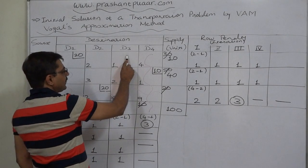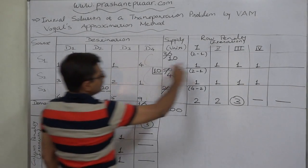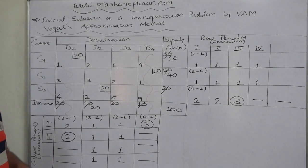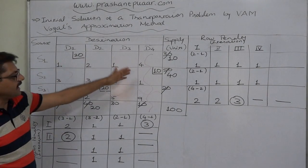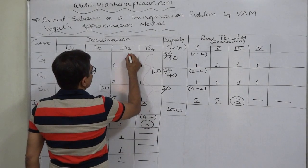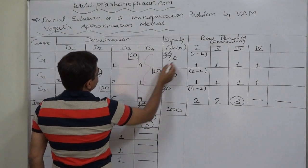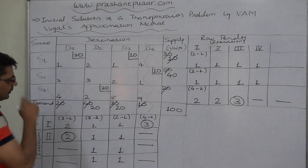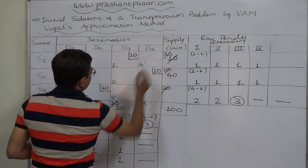Since the same cell is selected whether we choose row S1 or column D3, there is no confusion. We make allocation in this cell: demand 30, supply 10 — whichever is lower, so 10. Supply of S1 is exhausted, but demand of D3 still has 20 units unsatisfied. Cancel row S1.